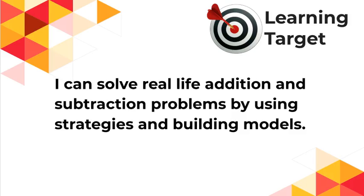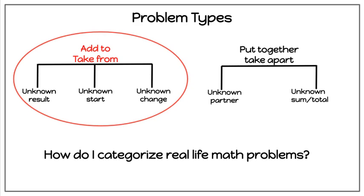I can solve real-life addition and subtraction problems by using strategies and building models. In this video, we will look at a special type of add-to, take-from problem: unknown result problems. When you have an unknown result problem, you will either have the change be addition or the change be subtraction. Listen and follow along as I think aloud through both types of problems.